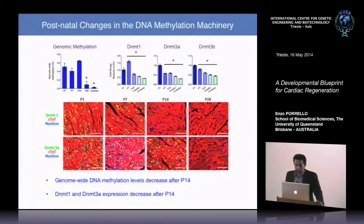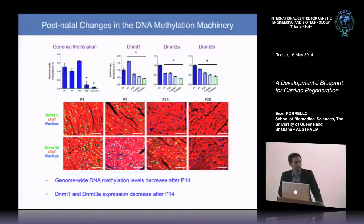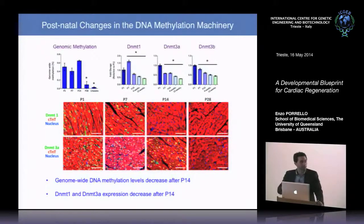Immunofluorescence staining for DNMT1 and DNMT3A confirmed these findings — the DNMTs are highly expressed during early postnatal development and completely undetectable by day 28. Using multiple approaches, we've shown that genome-wide DNA methylation levels decrease after P14 and that DNMT1 and 3A expression also decreases after P14.